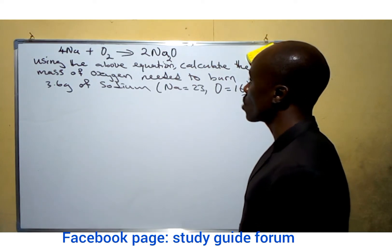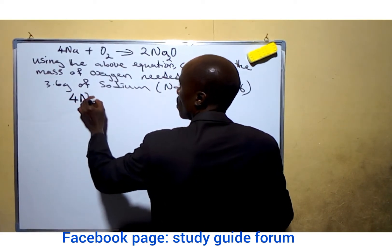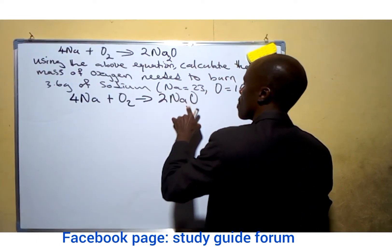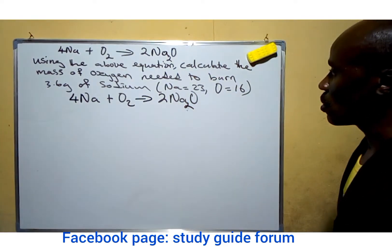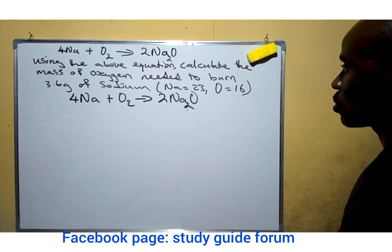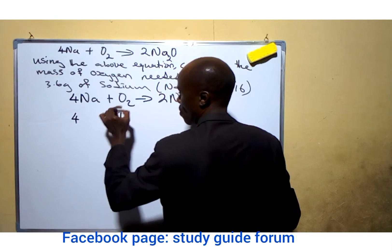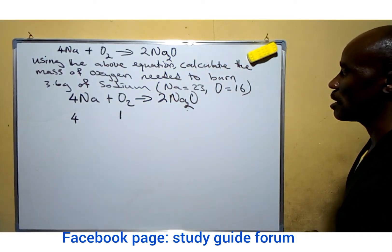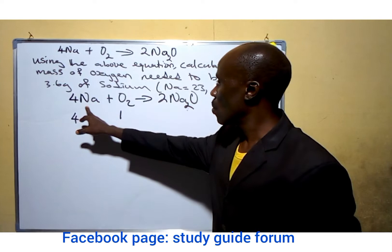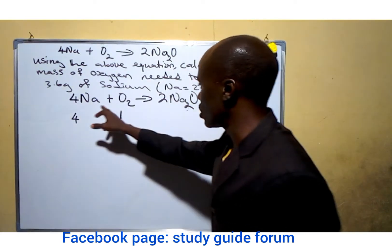Based on the question, a close look at this chemical equation will allow us to see it has a lot of information. Some of the information we have here is the moles of the reactants: 4 moles of sodium and 1 mole of oxygen. That is what we can see there, because what we are focused on is the relationship between sodium and oxygen — the mass relationship that exists between them.